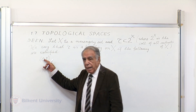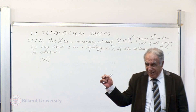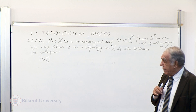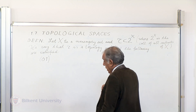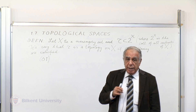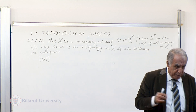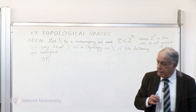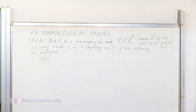These are the open set properties. If tau is to represent all open sets, then the first condition says that the empty set phi and the entire space X must be members of tau.